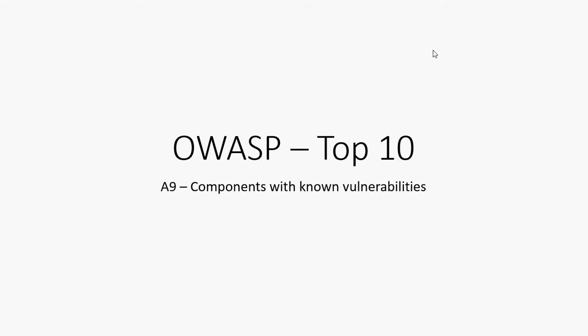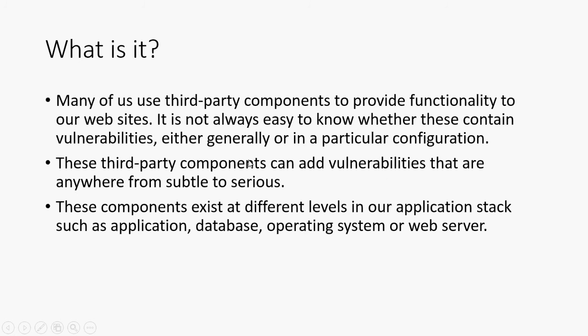Welcome back to the OWASP Top 10 tutorial series. In this series I've been explaining what each of these top 10 web application vulnerabilities are. Number A9 from the 2013 list is called 'Components with Known Vulnerabilities.' Most of us use different components in our web applications to provide functionality because we don't want to reinvent everything, and someone else has often done a better job — but it's not always easy to know whether these components contain vulnerabilities themselves.